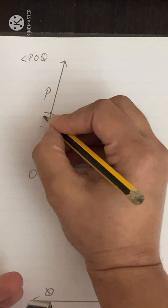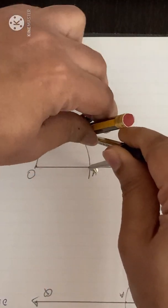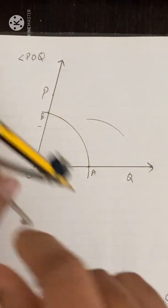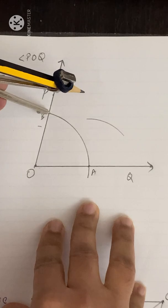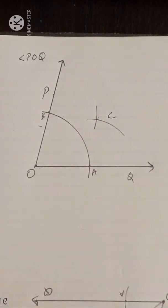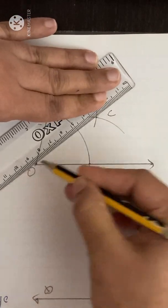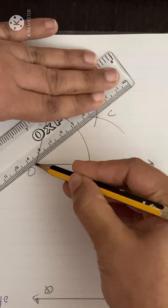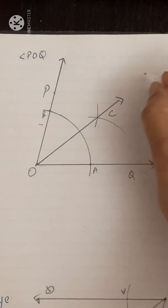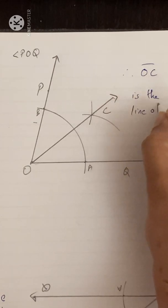Name the two points as A and B for convenience. Now with A as center, take a radius more than half of arc AB and draw an arc. With B as center, without changing the radius, draw another arc. Let this intersection point be C. Now join O and C. Therefore, OC is the line of symmetry.